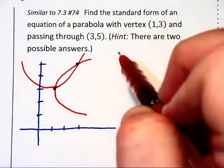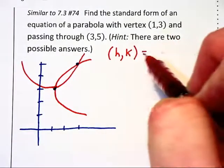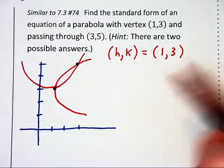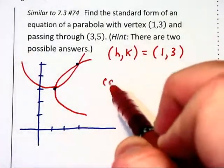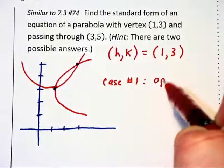In either case, we know that our vertex, or h comma k, is one comma three. Now, let's break this into two cases. Case number one is where this curve opens up.